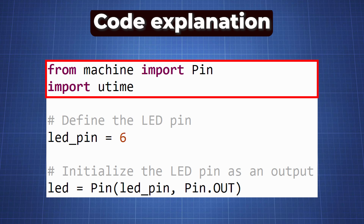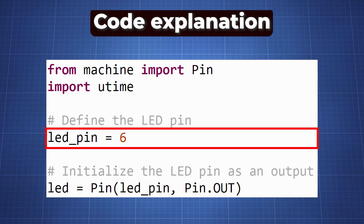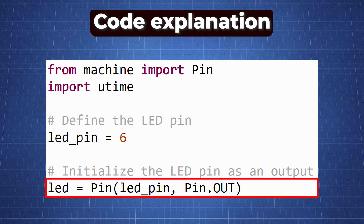Let's go through the code together. We first import the necessary libraries — we'll import Pin from the machine library and also import utime to make a delay. We then define the LED with a variable LED pin and set this equal to pin number 6. We then initialize the LED pin as an output using the Pin method Pin.OUT.